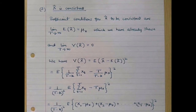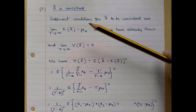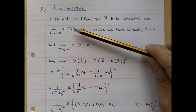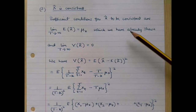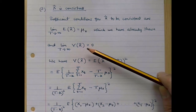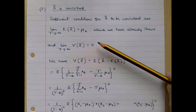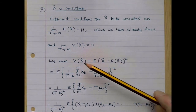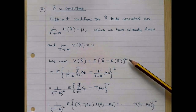Finally, let's consider the proposition that x tilde is consistent. Sufficient conditions for x tilde to be consistent are: first of all, that it be asymptotically unbiased — the limit as T tends to infinity of the expected value of x tilde equals mu x — which we've already shown. And secondly, the limit of the variance of x tilde as T tends to infinity should equal 0. To demonstrate this, we first note that the variance of x tilde is equal to the expected value of x tilde minus its expected value, all squared.